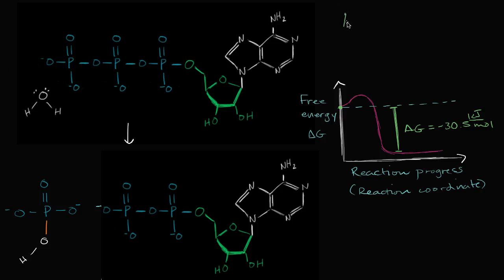We've talked a lot about ATP being the energy currency of cells, but I want to dig a little bit deeper into that in this video. When we go from ATP to ADP plus a phosphate group, we have a release of free energy. ATP's free energy is higher, but once hydrolysis has taken place and it's ADP plus a phosphate group, the free energy has dropped by roughly 30.5 kilojoules per mole, or our delta G is negative 30.5 kilojoules per mole.